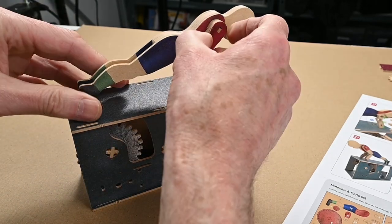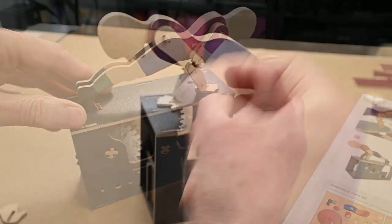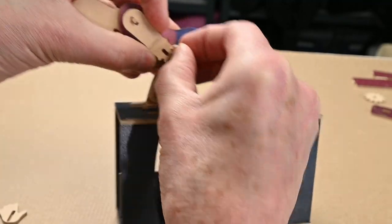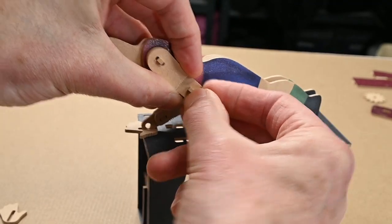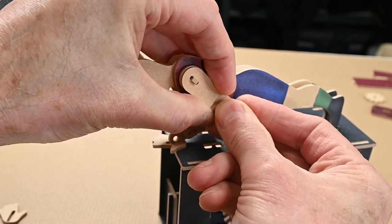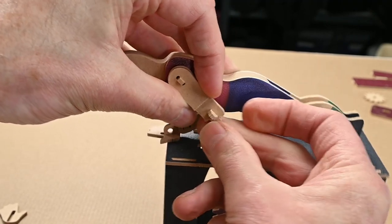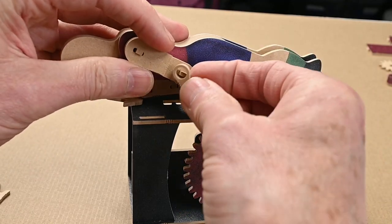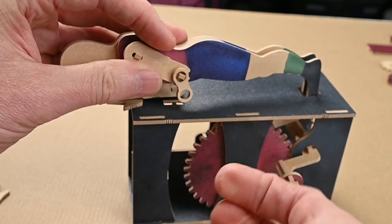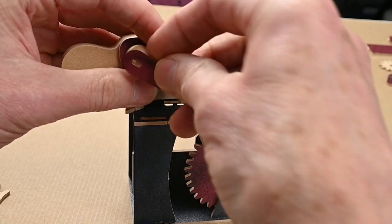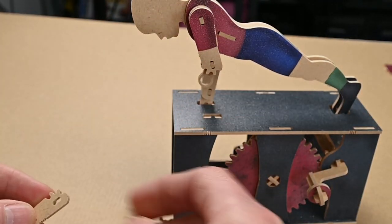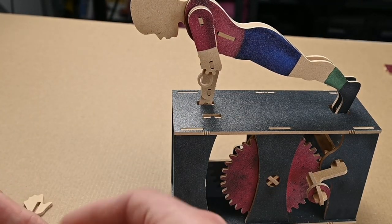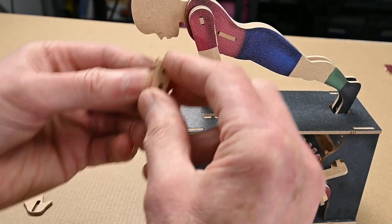And then I'll just do the same thing on the other side. Then one of these little tiny pegs. I can't believe you managed to cut pegs that small on a CNC machine and they'll work really well. And then that loop goes on there. And then that cover goes on this side. And then we have the same with these ones.